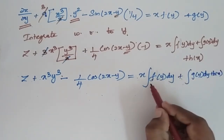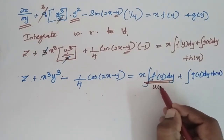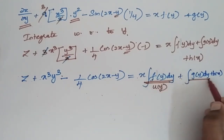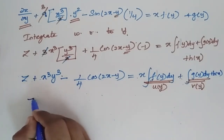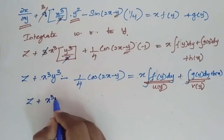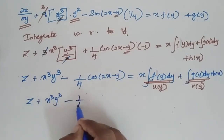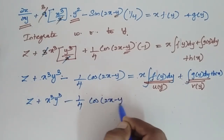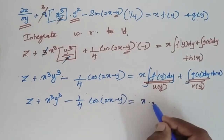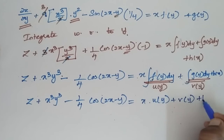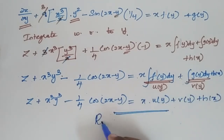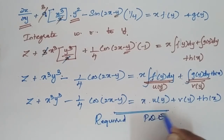Now replacing ∫f(y)dy by u(y) and ∫g(y)dy by v(y), the general solution is: z = x³y³ - (1/4)cos(2x - y) + x·u(y) + v(y) + h(x). This is the required solution of the partial differential equation.